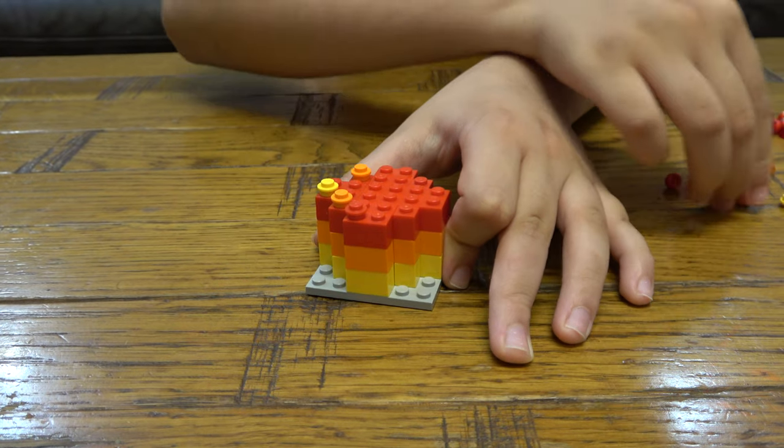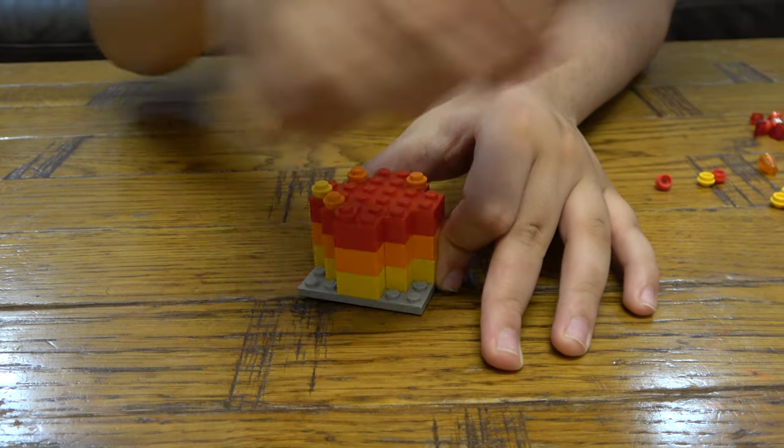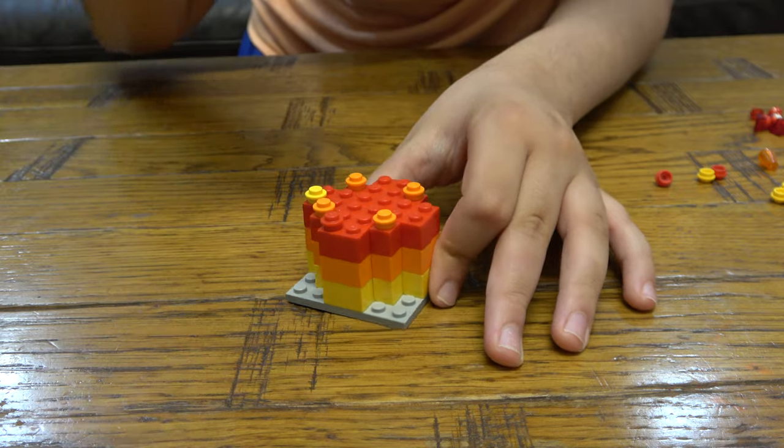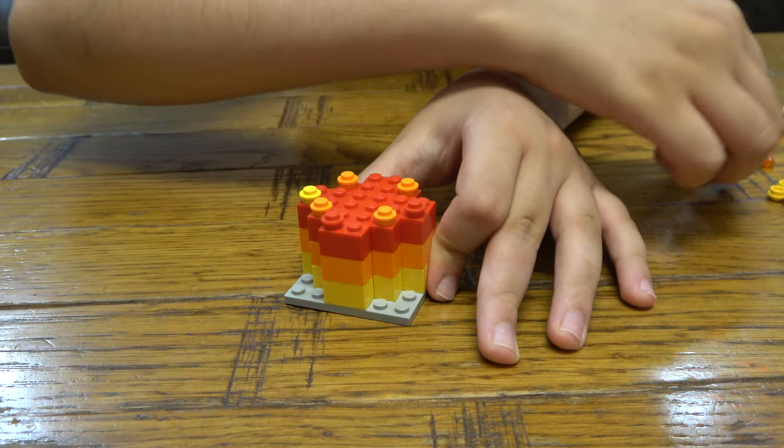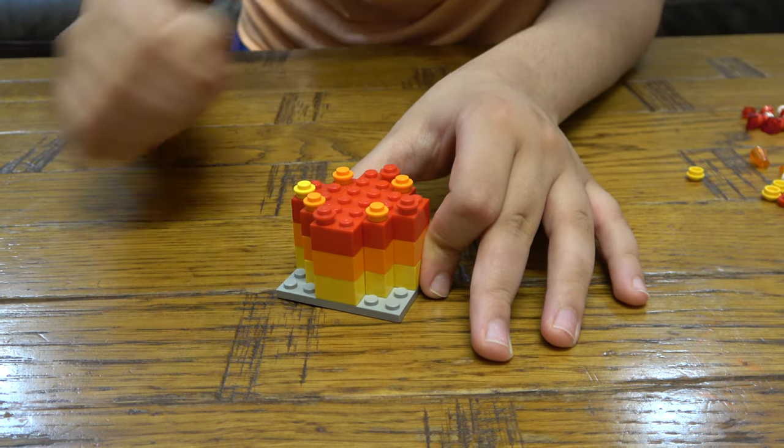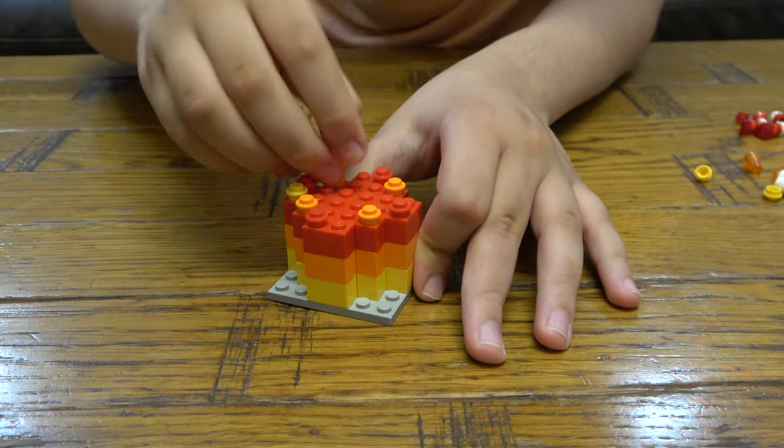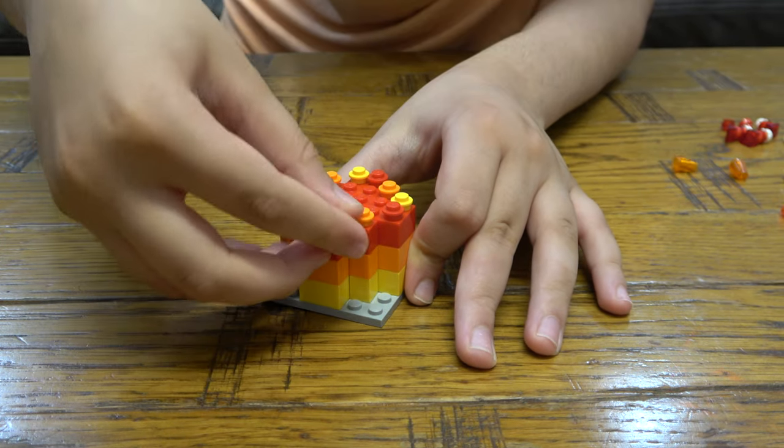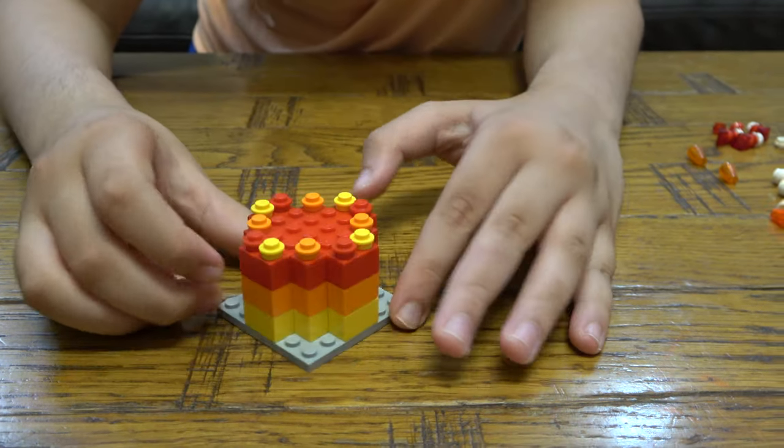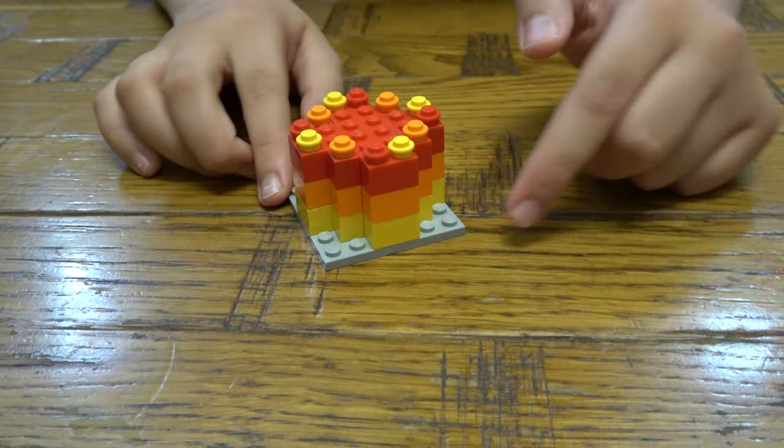So all we know is that the orange go on these four corners, and we know that the red go here, and then the yellow go on the rest. And there we go, we made it a 3.5 out of 10.